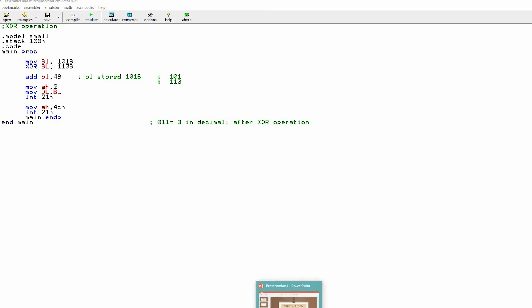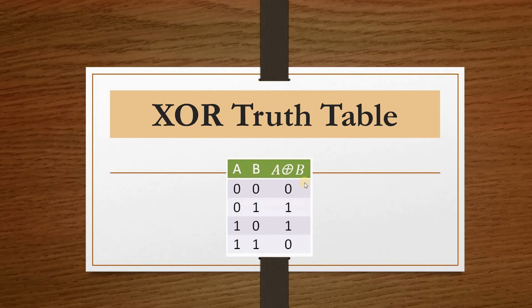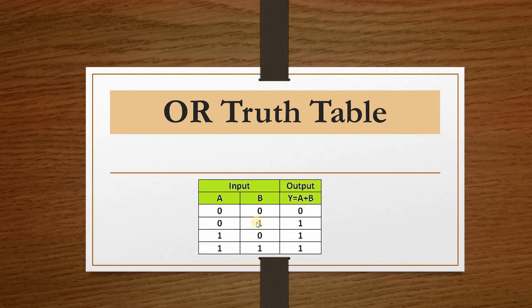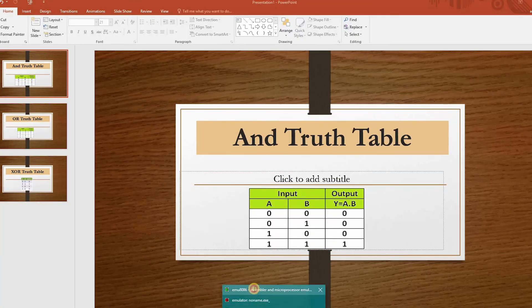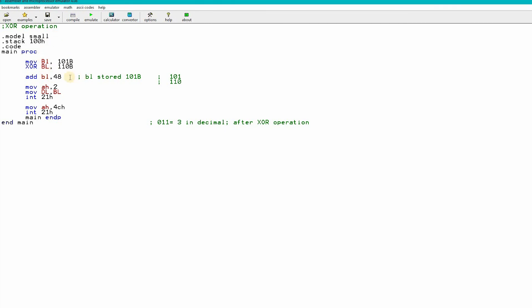To summarize: for XOR, if both inputs are the same you get zero; if inputs are different you get one. For OR, if one of them is one the output is one; if both are zero the output is zero; if both are one the output is one. For AND, if one of them is zero the answer is zero; if both are one the output is one. I hope you understand the coding implementation and the truth tables of XOR, OR, and AND operations in assembly language. Please subscribe to my channel — I will upload more assembly language coding tutorials. Stay tuned, thanks.